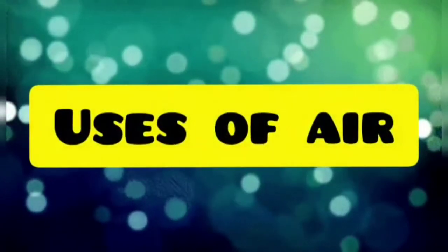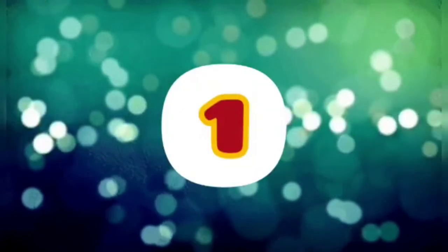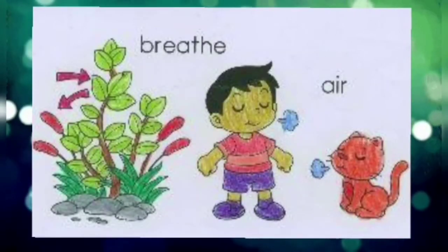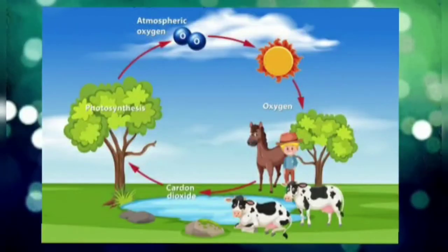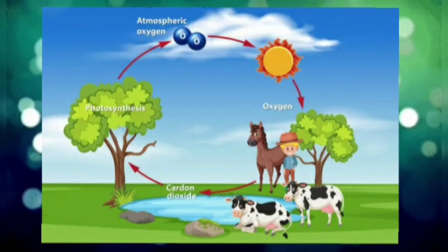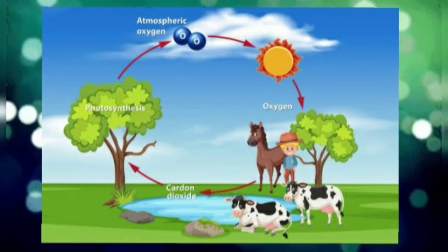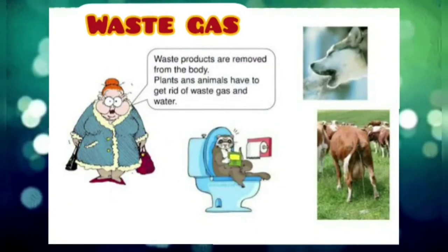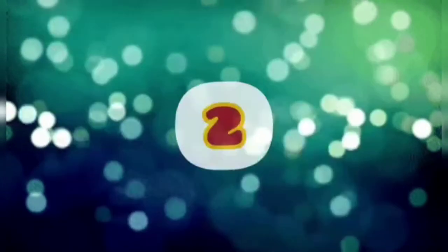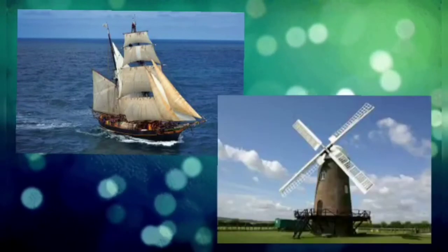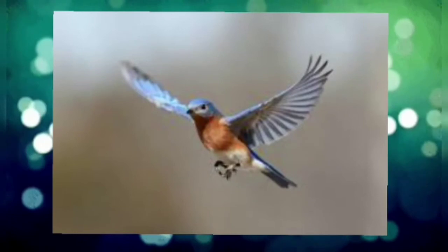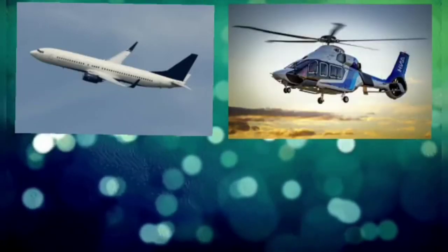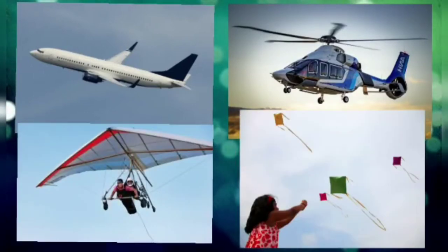Next are the uses of air. First, air provides the gas that living things need for breathing. For example, animals take in oxygen and plants take in carbon dioxide from the air. Living things also release waste gas into the air. Second, wind helps to move sailboats and windmills. Third, air also helps birds to fly in the sky. It helps in the movement of aeroplanes, helicopters, gliders, and in flying kites.